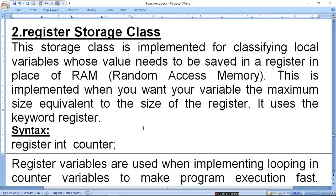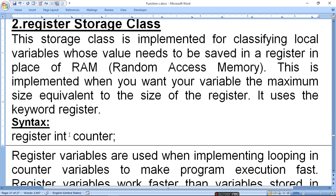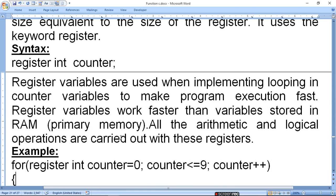The second class is the register storage class. This is implemented for classifying local variables that need to be stored in a register in place of RAM. When we save a local variable in a register instead of memory, we use this class. The maximum size is equivalent to the size of the register. It uses the keyword 'register'. Example: 'register int counter' — generally used with loops to make execution faster.